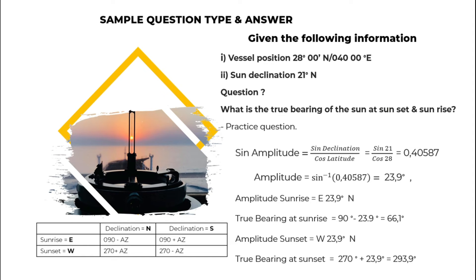The amplitude at sunset is W 23.9° North — labeled West due to sunset, and North same as the declination. From the table, when the azimuth label is West-North, the true bearing at sunset equals 270° plus the azimuth: 270° plus 23.9° equals 293.9°.